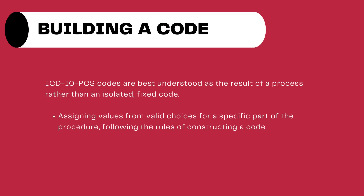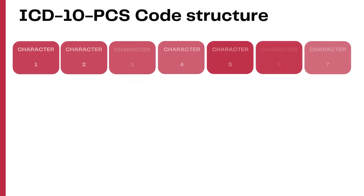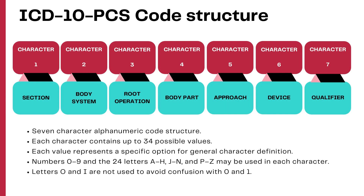ICD-10 PCS is all about following a process to build the code. We need to identify the different values and build the code from the beginning for PCS, rather than searching for a code. So the seven characters — we will talk about each of these seven characters one after the other.